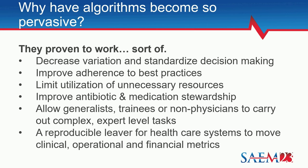Probably the biggest reason — and why you're going to see a lot more of this — is that algorithms basically give you a reproducible lever for the healthcare system to impact clinical metrics, financial metrics, and operational metrics. When I talk about value-based care, really what comes out in our day-to-day life are metrics. One of the very few things actually shown to change metrics are algorithmic responses to clinical situations. All of the pay-for-performance and other classic approaches have not changed those metrics all that much, but algorithms have.